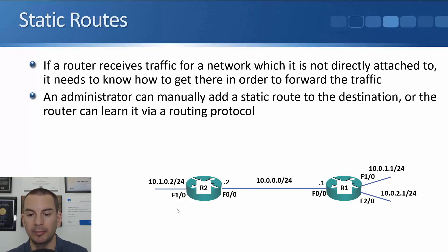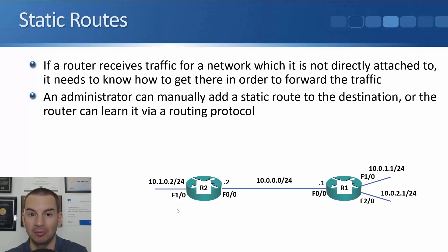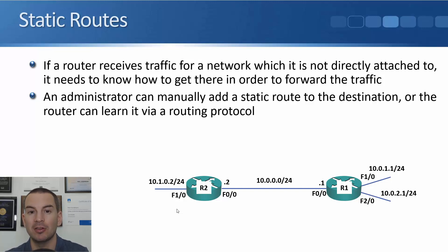You see the example here down at the bottom. I've got R1, which is directly connected to the 10.0.0, 10.0.1, and 10.0.2 networks, so it can route traffic directly there just by configuring the IP addresses. But there's another network of 10.1.0 which is behind router R2, so right now R1 doesn't know how to get there. I'm going to need to add a route to tell it how to get there. And R2 is directly connected to 10.1.0 and 10.0.0, so it's going to need routes to 10.0.1 and 10.0.2 behind router R1.